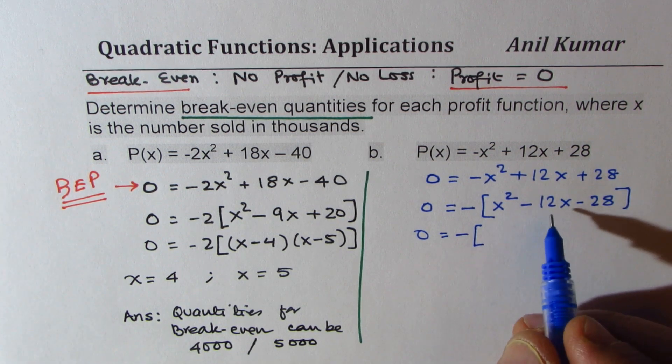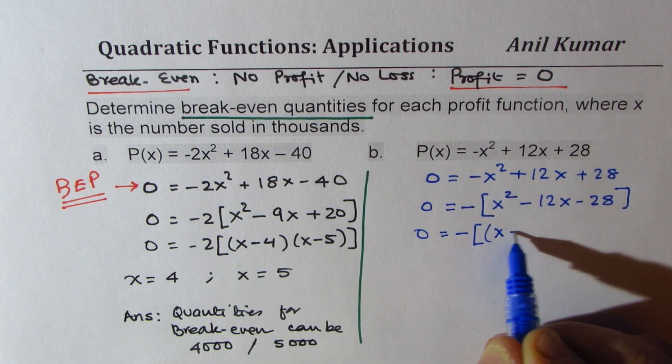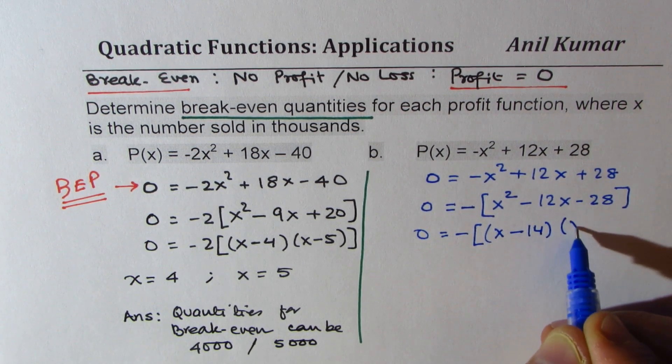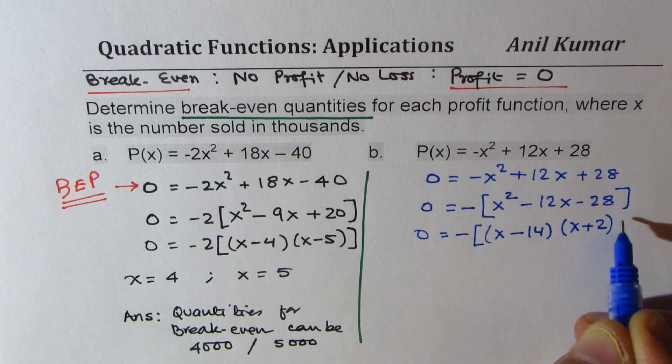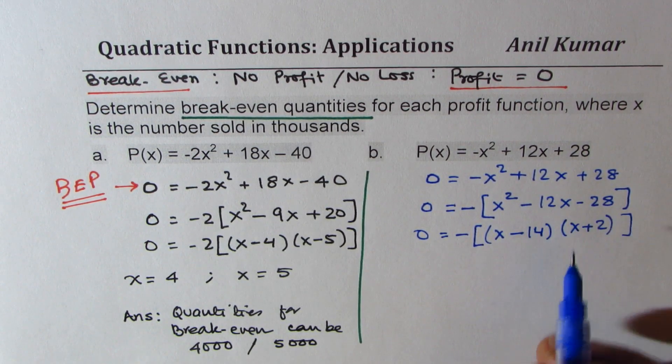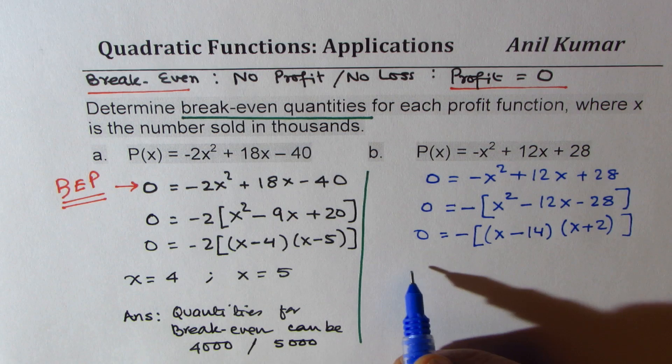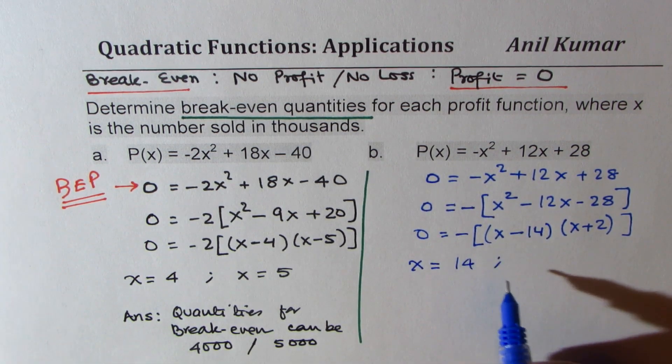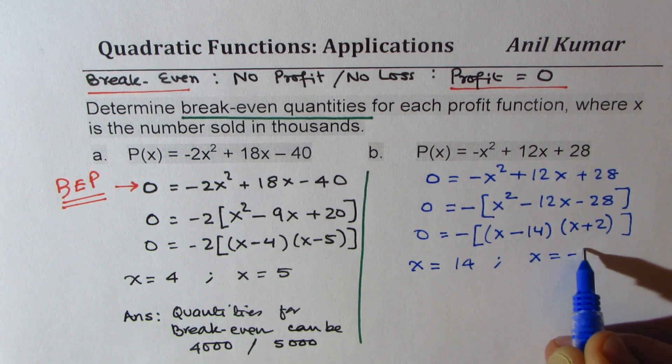So what we get here is (x - 14)(x + 2). When you multiply you get negative 28, and when you add you get minus 12. So this gives you two solutions: one is x equals 14, the other one is x equals negative 2.